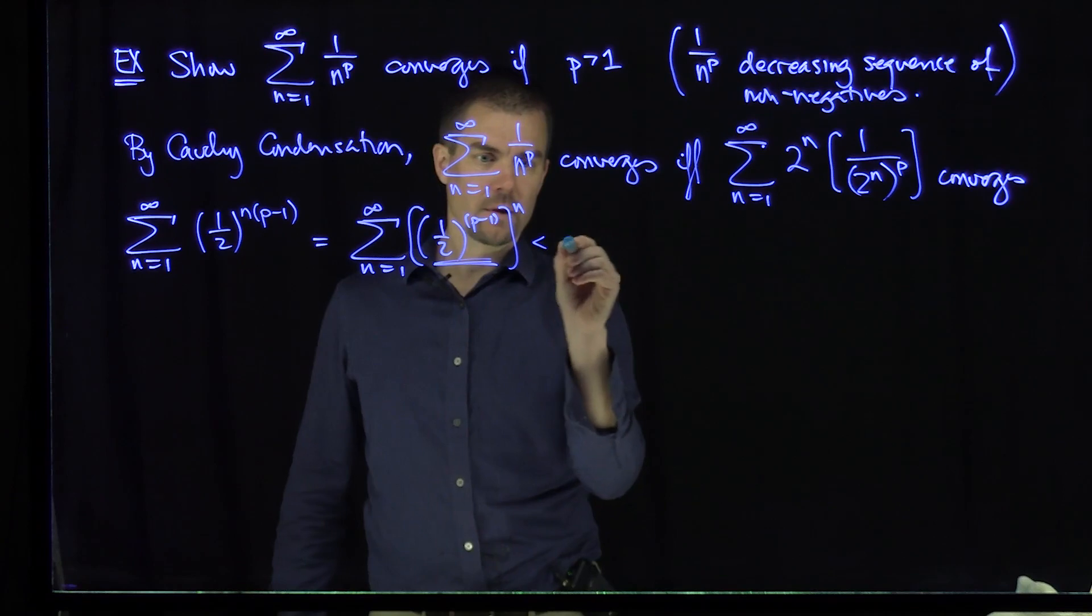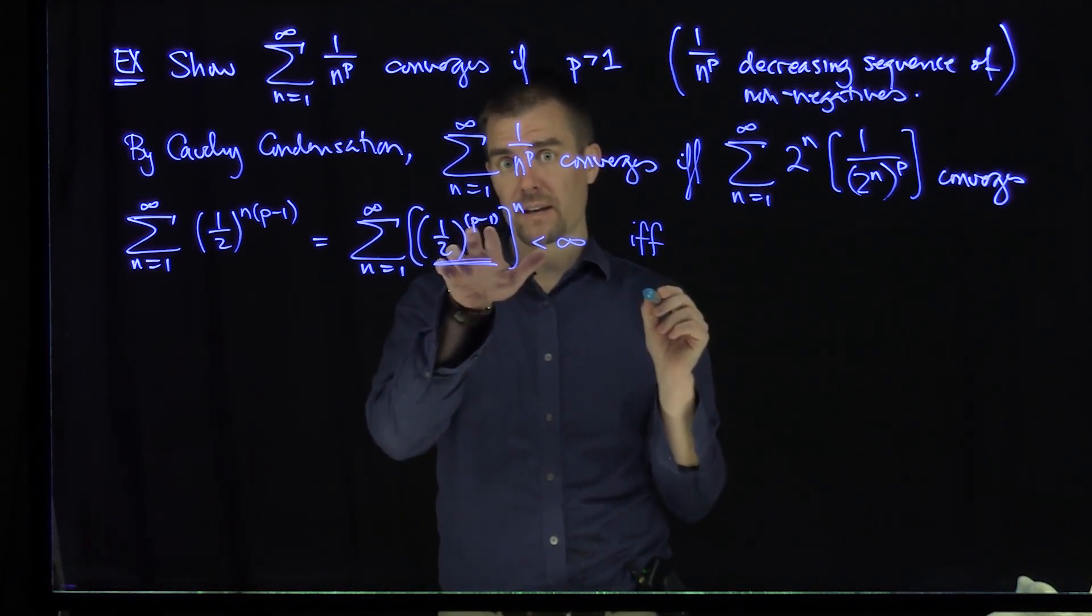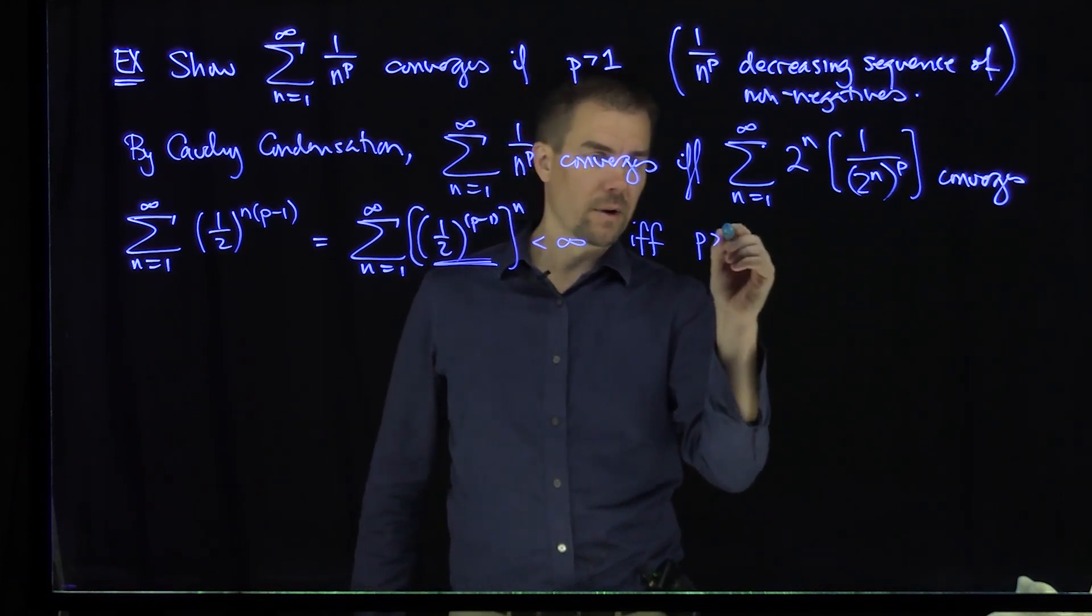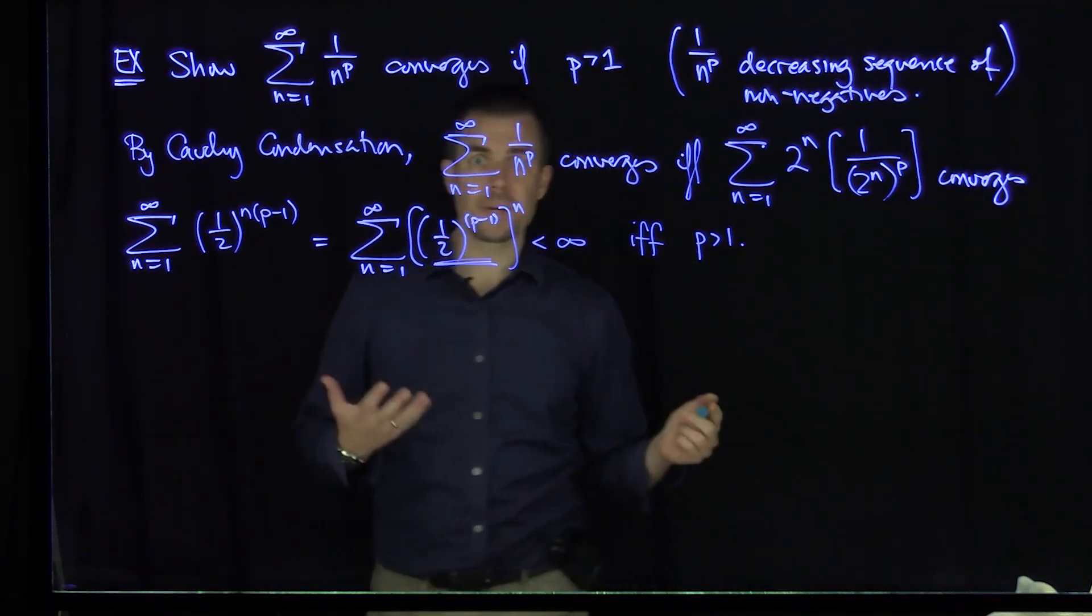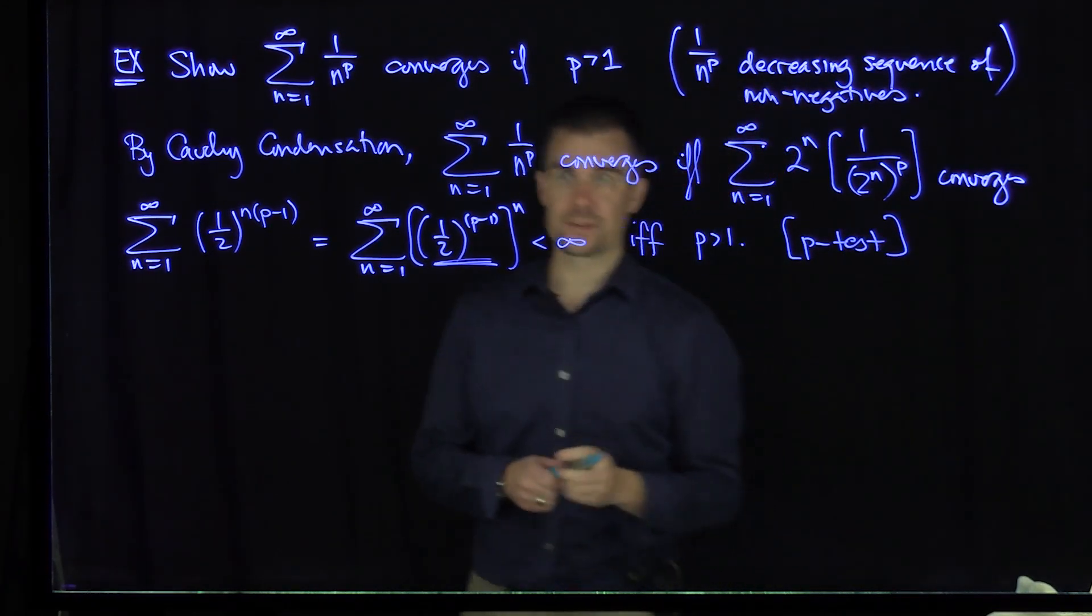So this number would be less than 1 if and only if, so this is going to converge if and only if this number is a non-negative number. So I need p to be bigger than 1. And so that gives us our p-test. So the p-test for convergence follows from Cauchy condensation.